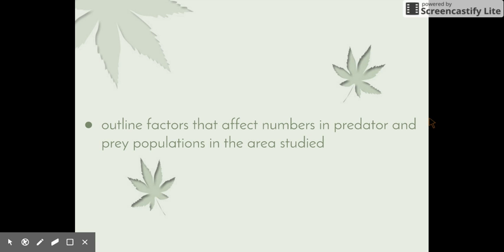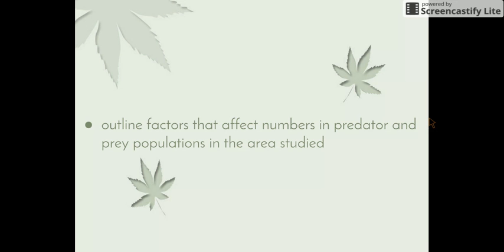Welcome to the next video in the local ecosystem topic. This video will be looking at the following dot point: outline factors that affect numbers in predator and prey populations in the area studied. The area we looked at was the mangrove environment or the forest environment, and we're going to have a look at a predator-prey relationship between foxes and rabbits.